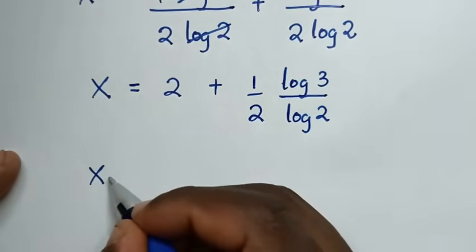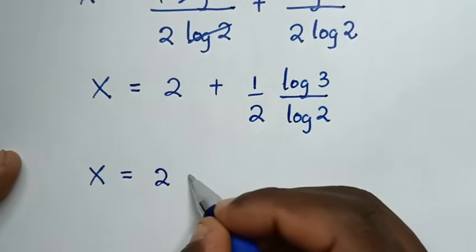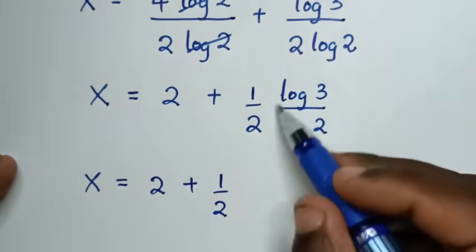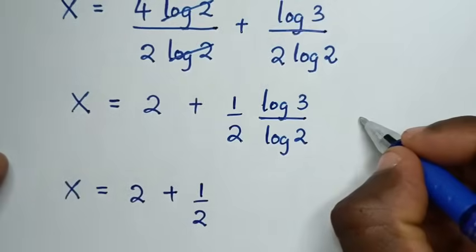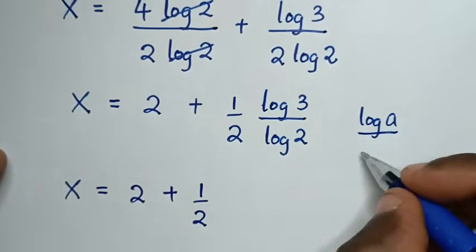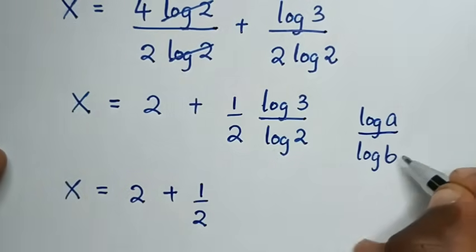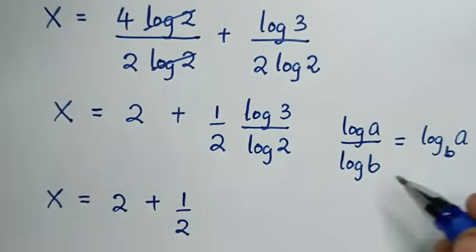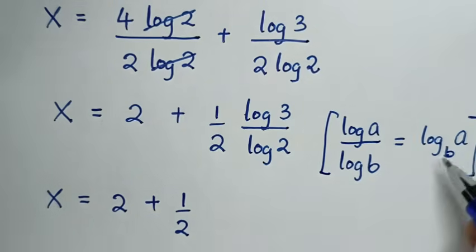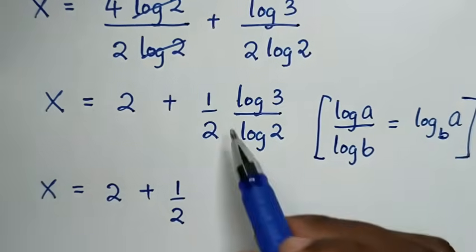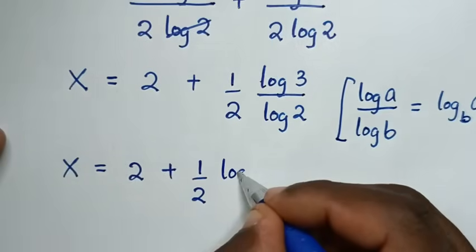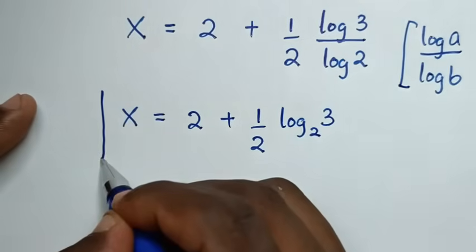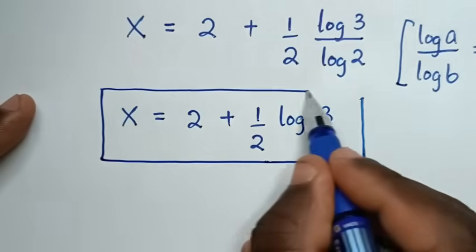Then x is equal to 2 plus a half times log of 3 over log of 2. This part is in the form of log of a over log of b, which is equal to log of a base b. So by applying this form, log of 3 over log of 2 is the same as log of 3 base 2. This is the final answer for the value of x in this problem.